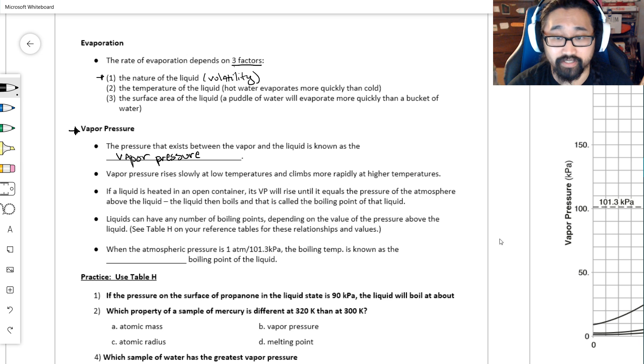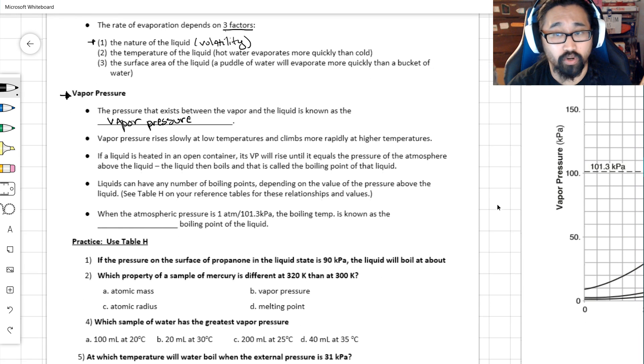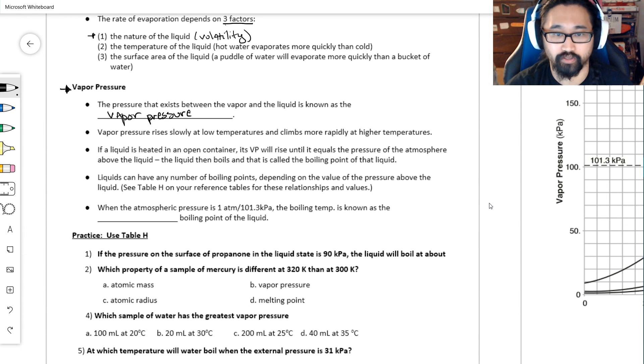Liquids can boil at different temperatures. Water is supposed to boil at 100 degrees Celsius at one atmosphere or 101.3 kilopascals. That is the normal boiling point of that liquid. That's the normal boiling point for water.